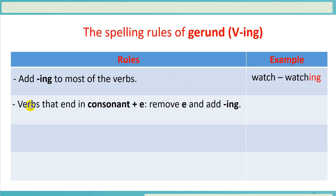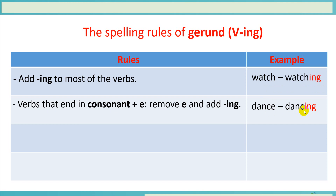Rule number two: verbs that end in consonant plus E — we remove the E and add -ing. For example, dance becomes dancing.